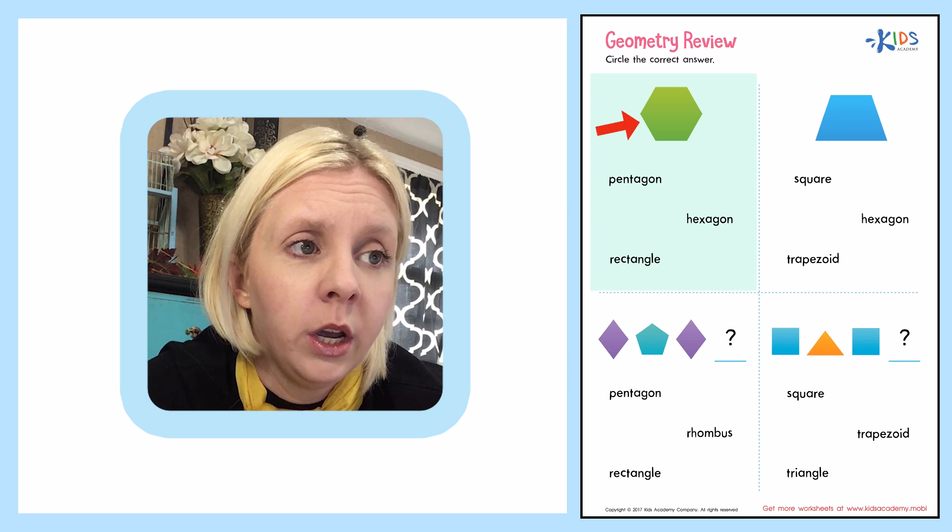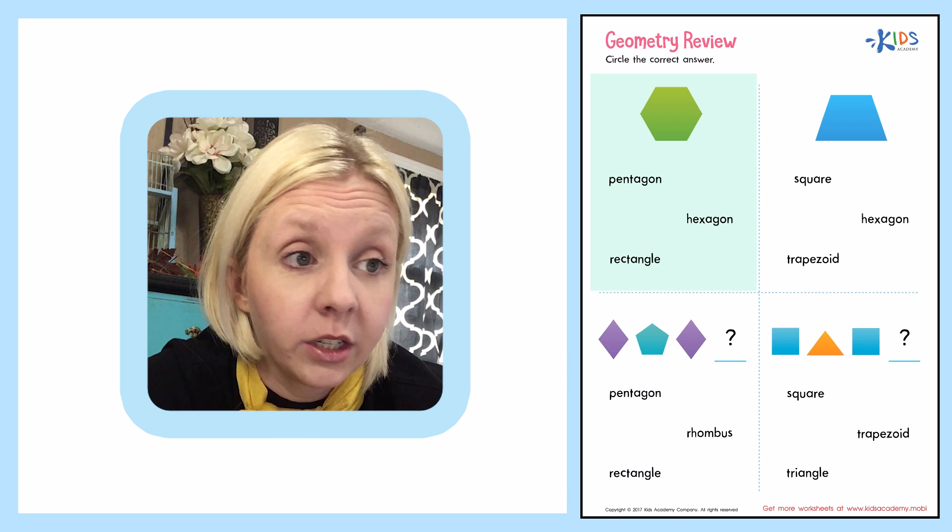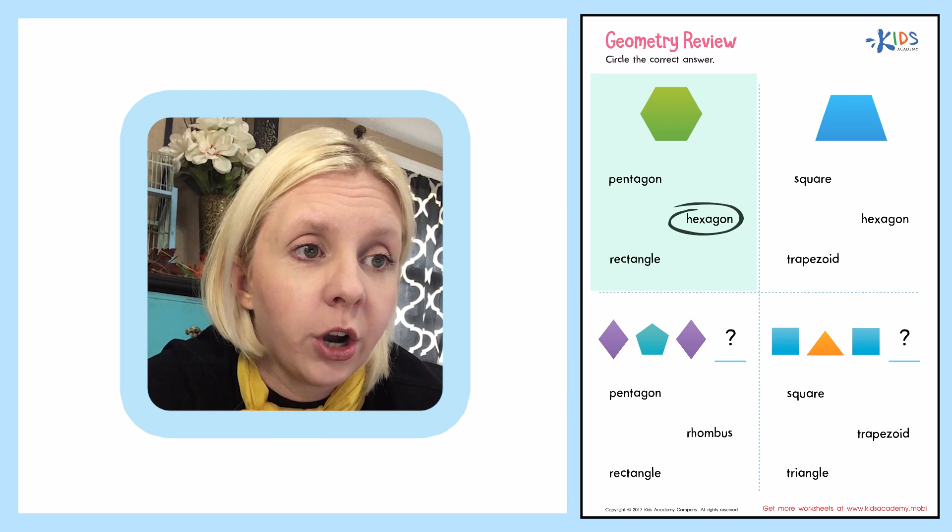So let's count how many sides. One, two, three, four, five, six. So it's a hexagon. So that's what we're going to circle right here is hexagon.